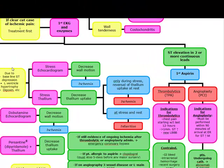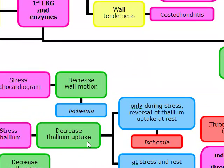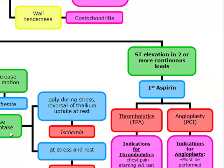For any of these stress tests — exercise stress test, stress echocardiogram, or stress thallium — angiography is the next diagnostic test to evaluate an abnormal stress test that shows reversible ischemia. Once the angiogram has been done, you can perform a coronary bypass on these patients.